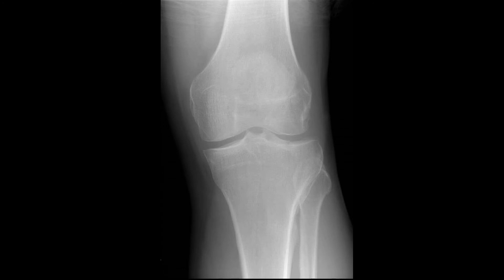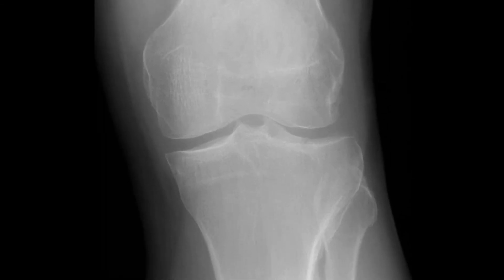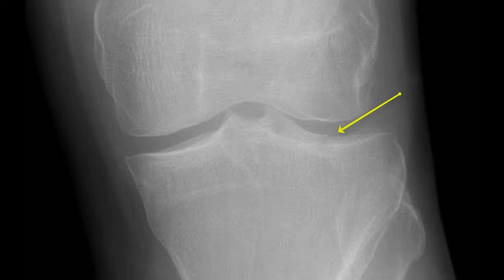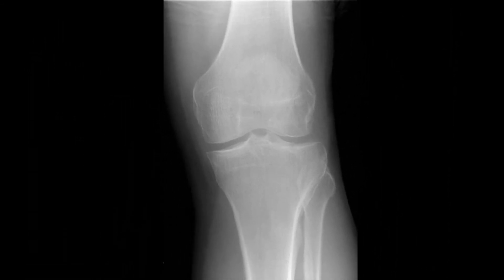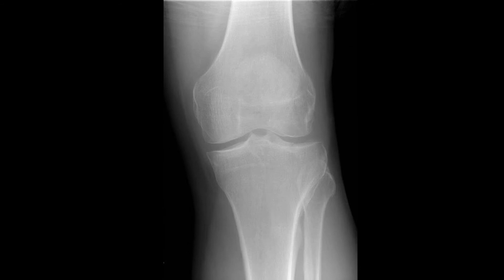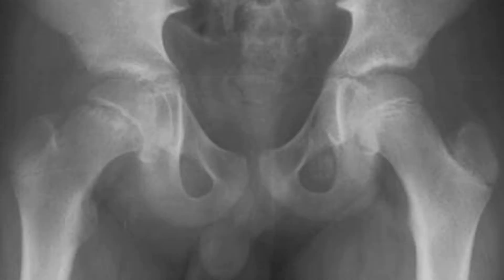X-ray number seven was actually one of the porters working in the emergency department who slipped, fell, and injured his knee. Initially the resident who saw him called the X-ray normal but requested a second opinion. You can see here there's a break in the cortex from a tibial plateau fracture. A subsequent CT showed minimal displacement and the injury was treated non-operatively — but yeah, you can see it's pretty easy to miss.